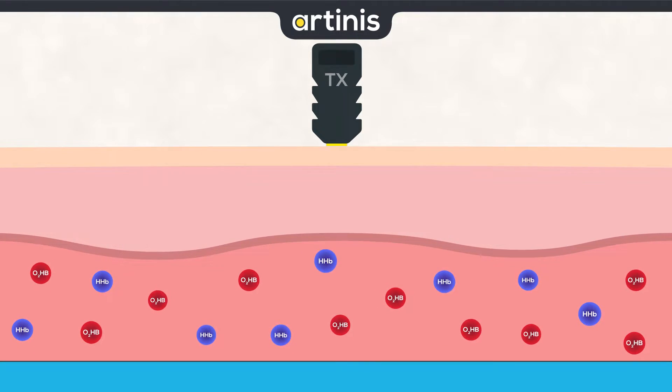With near-infrared spectroscopy, we can quantify the amount of ingoing light, the light that is fired from our transmitters, and the amount of outgoing light that is picked up by our receivers.